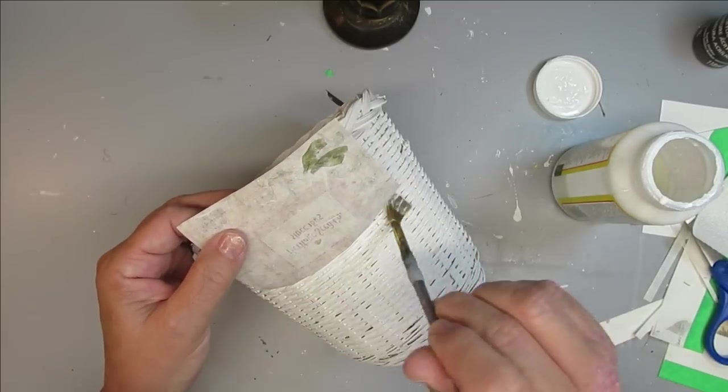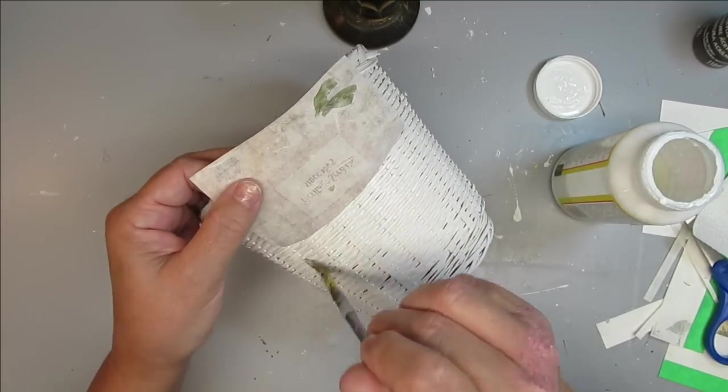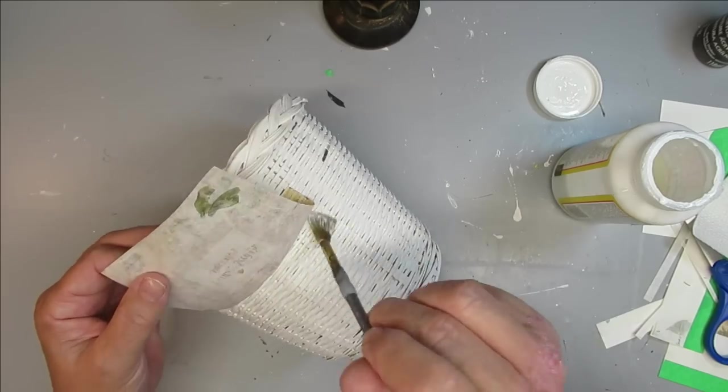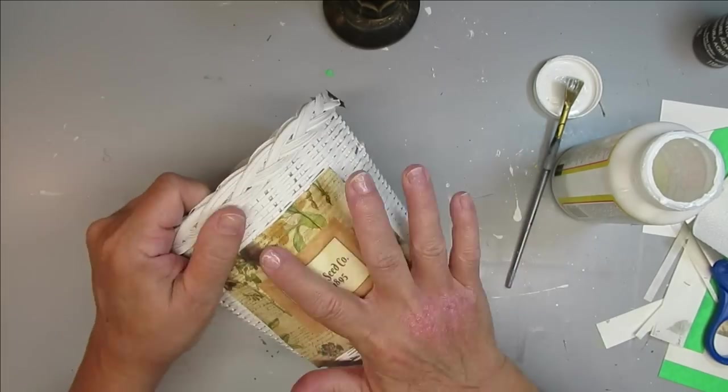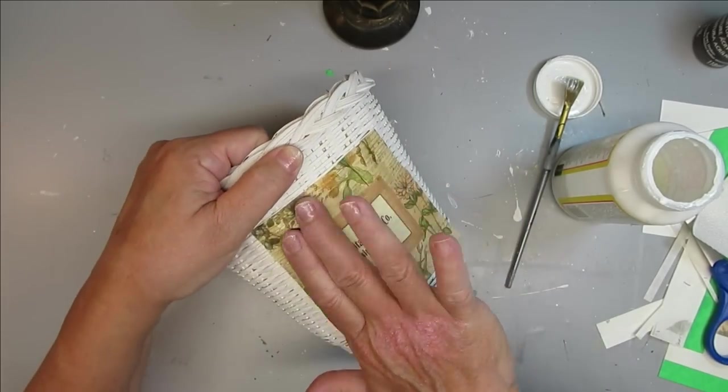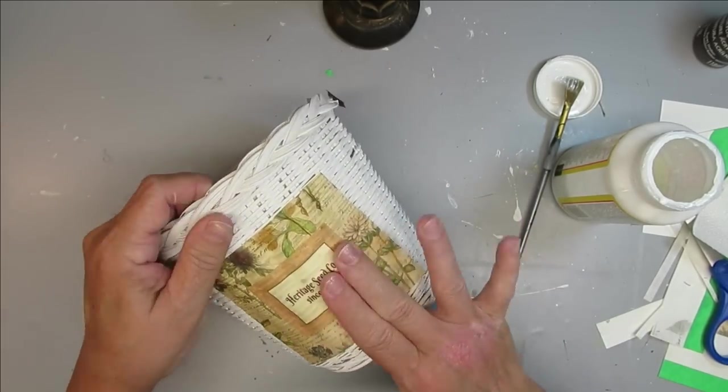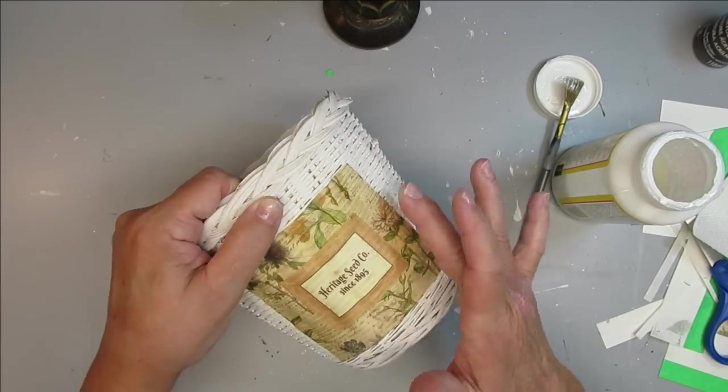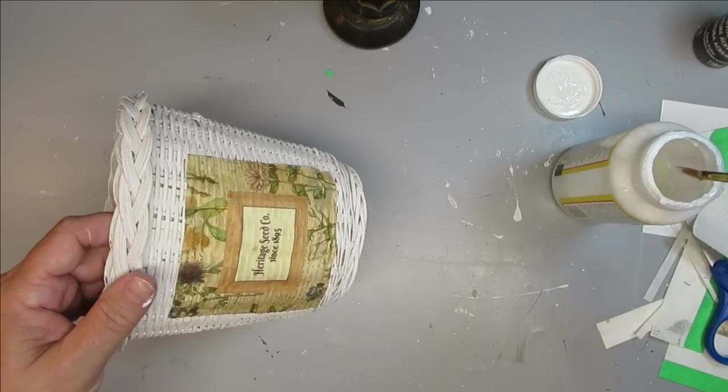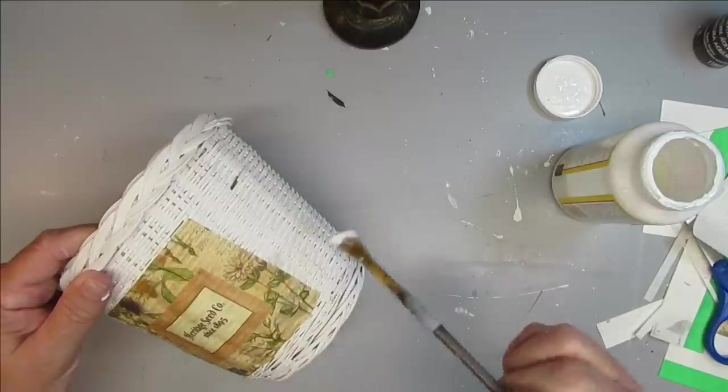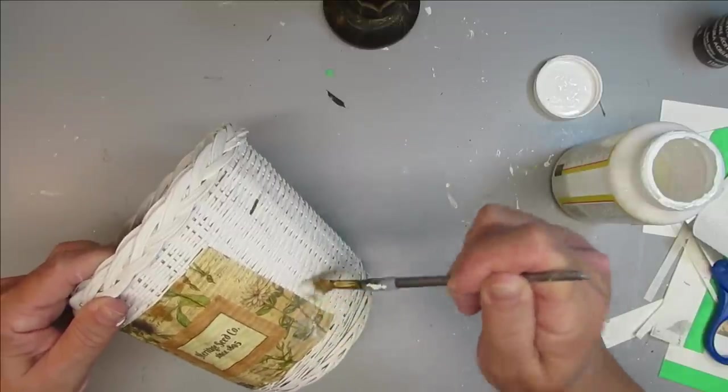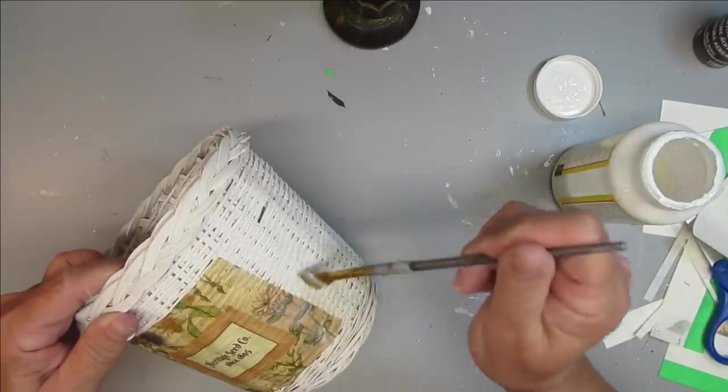When I'm working with Mod Podge I like to work in sections. So I just started with about an inch at the top and then I worked in my rice paper and now I'm going to add glue to the rest of the basket and continue working it in until it's fully secure. Because this is a little bit thicker than tissue paper I am going to go over the top of it with Mod Podge and just make sure that it's sealed in really well.